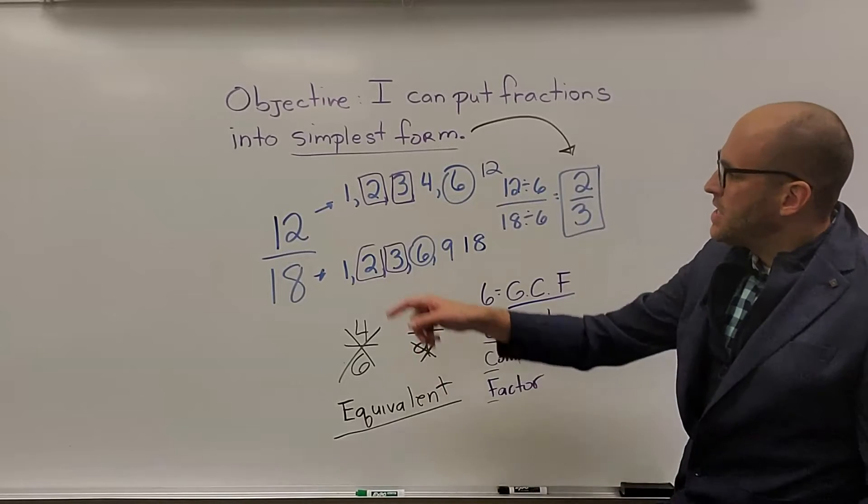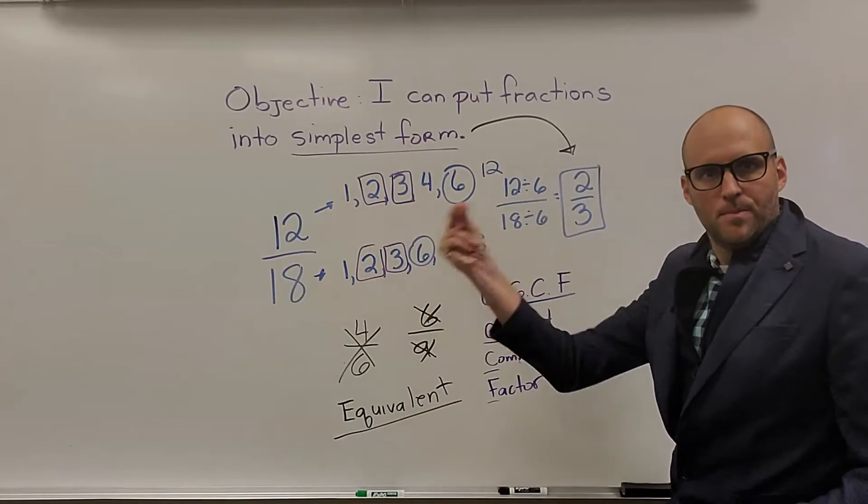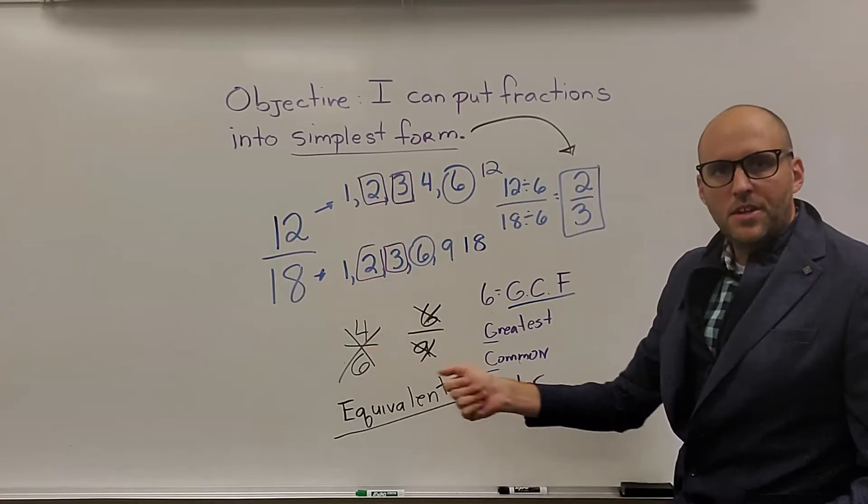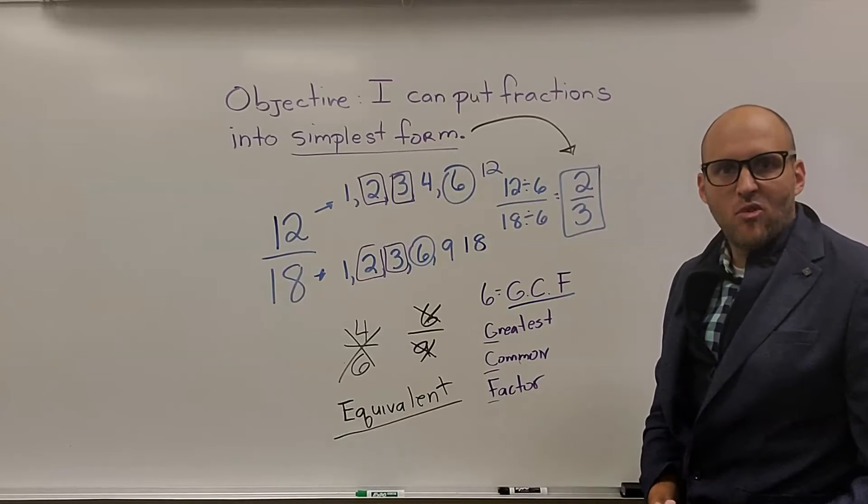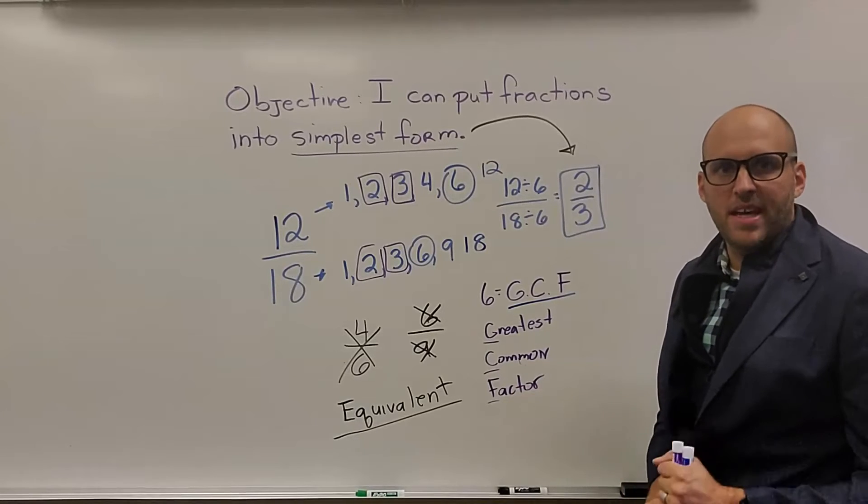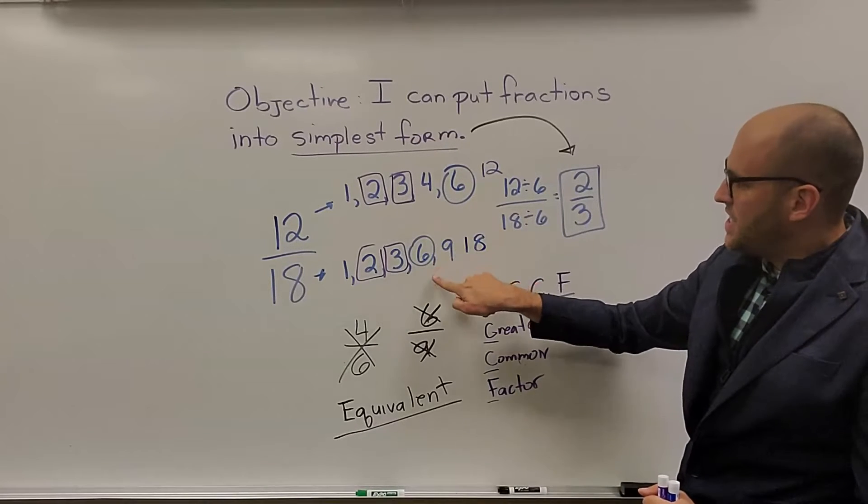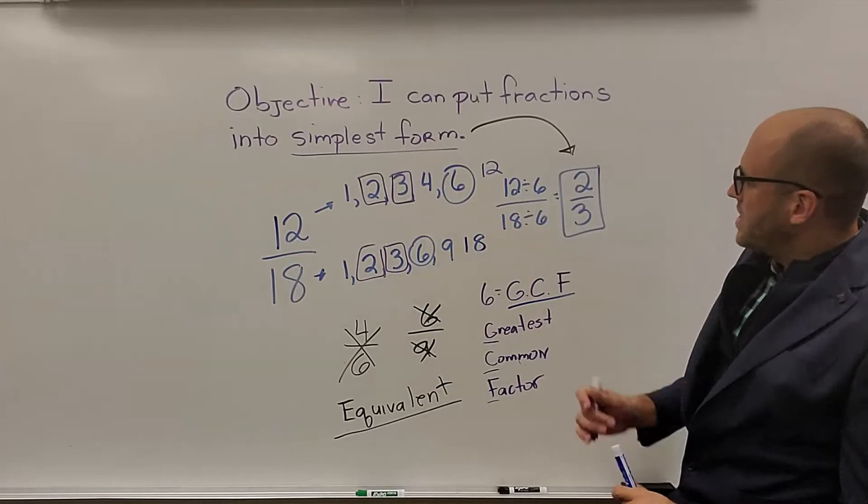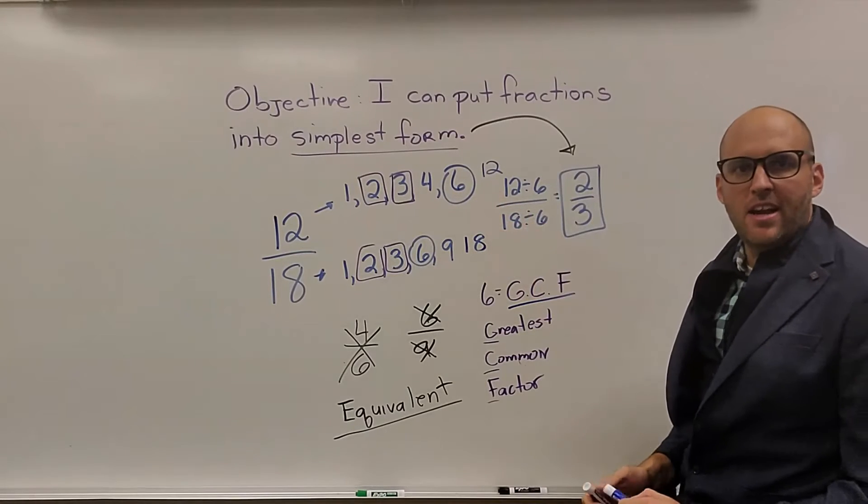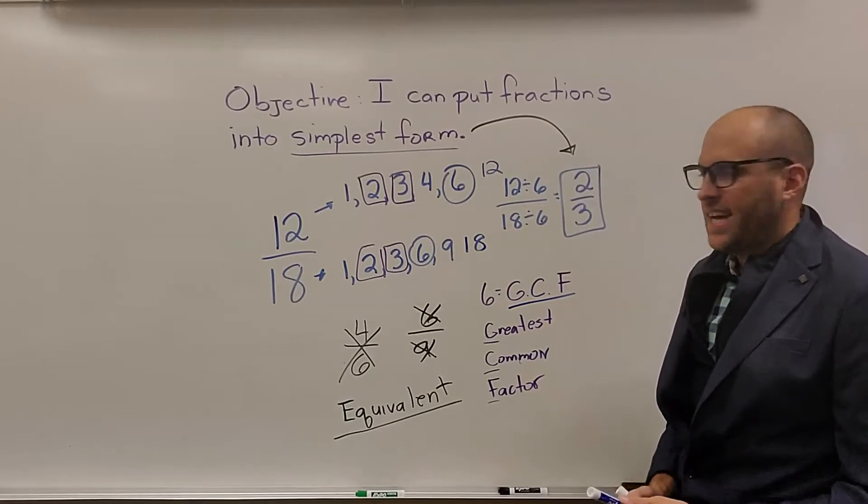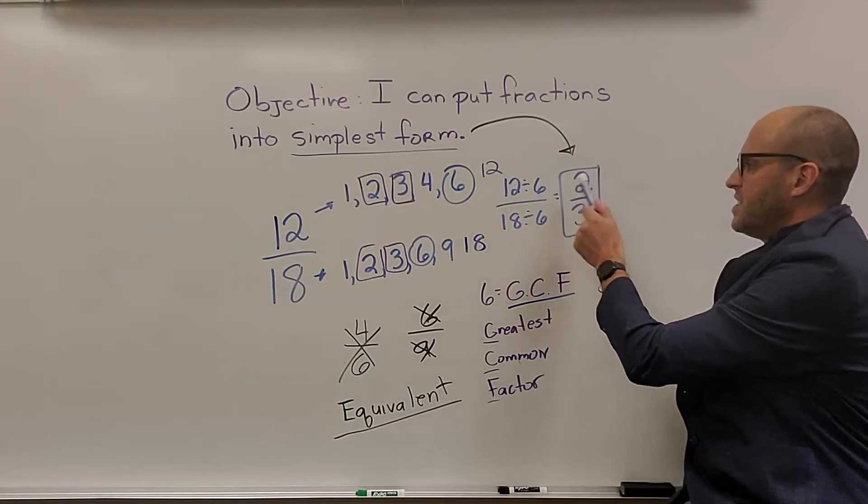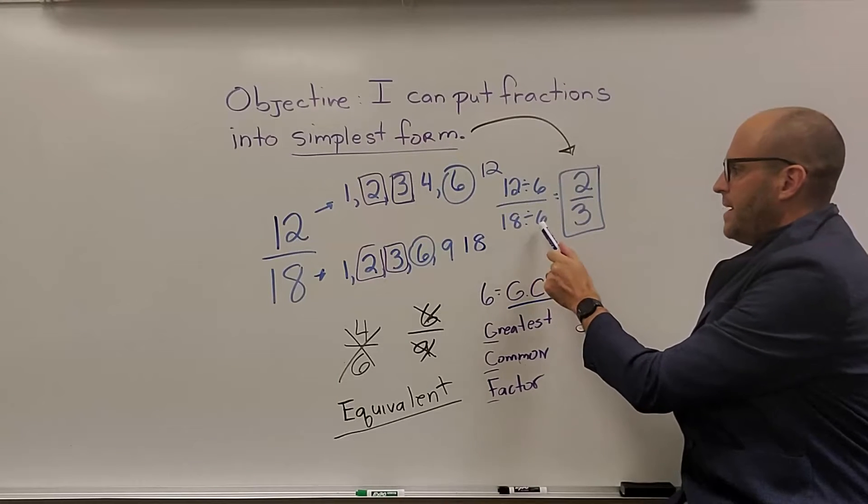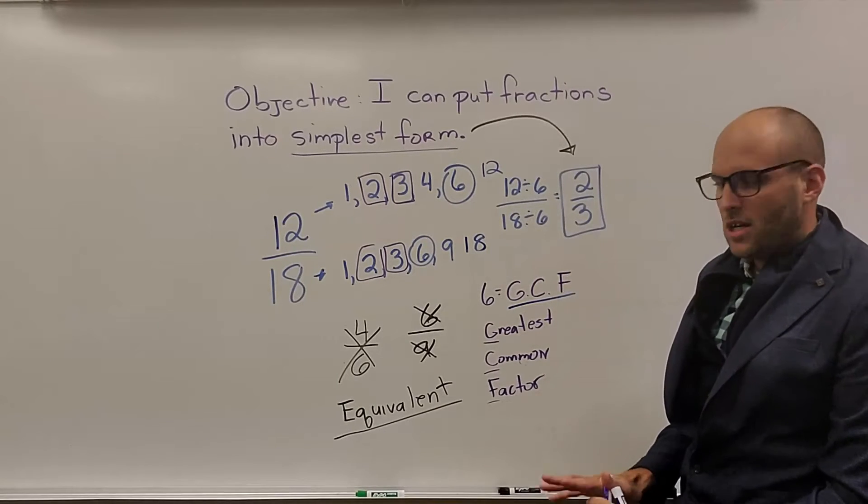A lot of times students will find this first number and they'll go, I've got it. They'll divide and oops, we have the wrong answer. So definitely look for that biggest number, which is 6 for both of these. So then you take the numerator and denominator and you divide them both by 6. 12 divided by 6 is 2. 18 divided by 6 is 3. We get two-thirds.